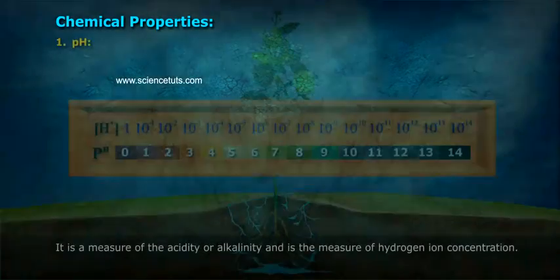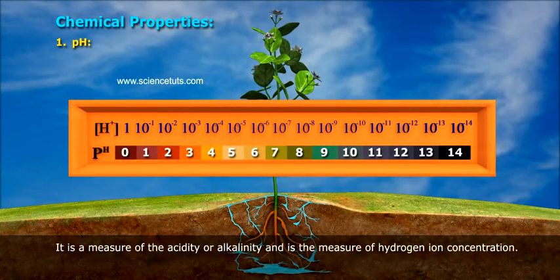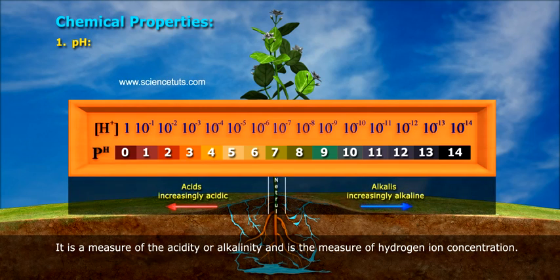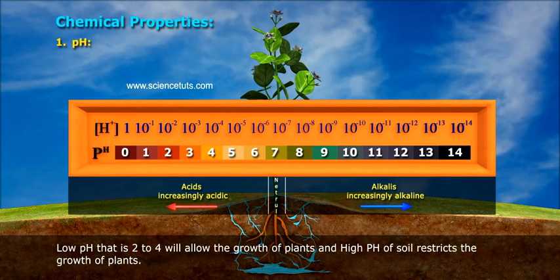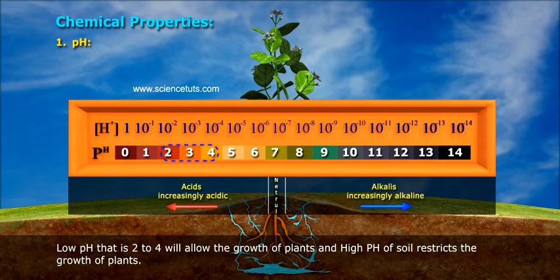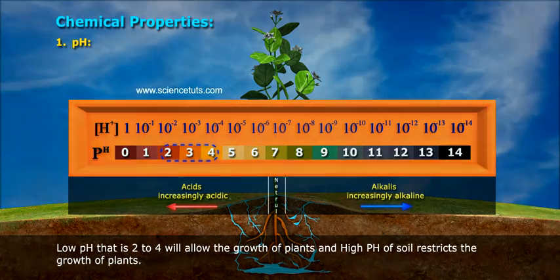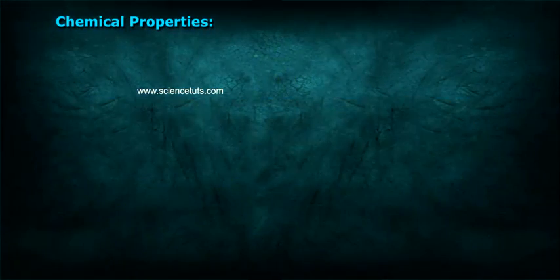Chemical Properties — pH: It is a measure of the acidity or alkalinity, and is the measure of hydrogen ion concentration. Low pH, that is 2 to 4, will allow the growth of plants, and high pH of soil restricts the growth of plants.